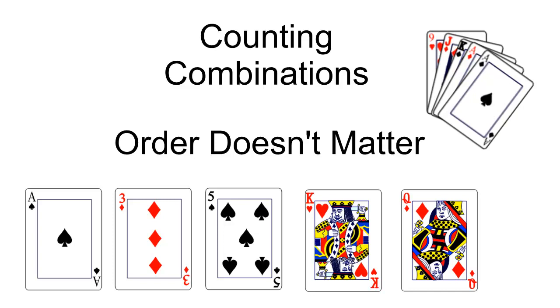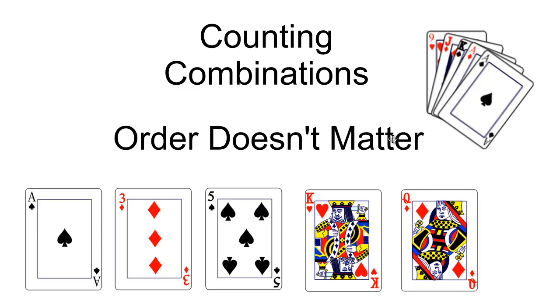We're going to be counting combinations of objects. Combinations of objects works a lot like permutations. The difference is that order just doesn't matter.